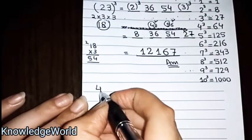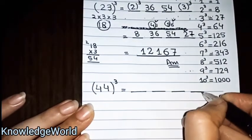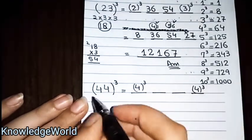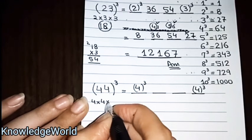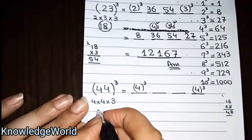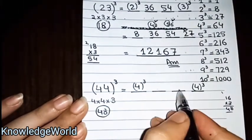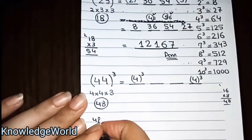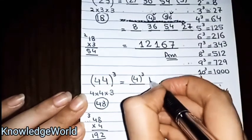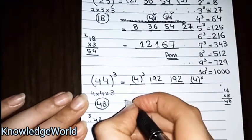For example, 44. We have drawn 4 lines. First is 4 cubed, last is 4 cubed. We will write 4 times 4 times 3. 4 times 4 is 16, times 3 equals 48. You have to multiply 48 with 4 and write it here, then multiply with the second number. 48 times 4 equals 192. Write it here. The other number is also 192.